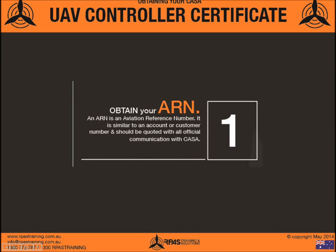Step 1: obtain your ARN. An ARN is basically an Aviation Reference Number — similar to an account or customer number. It should be quoted with all official communications with CASA. It's unique to you and is basically how they identify you in the aviation world. To obtain an ARN, you need to complete a form online. Open Google and type in CASA to find the Civil Aviation Safety Authority homepage.